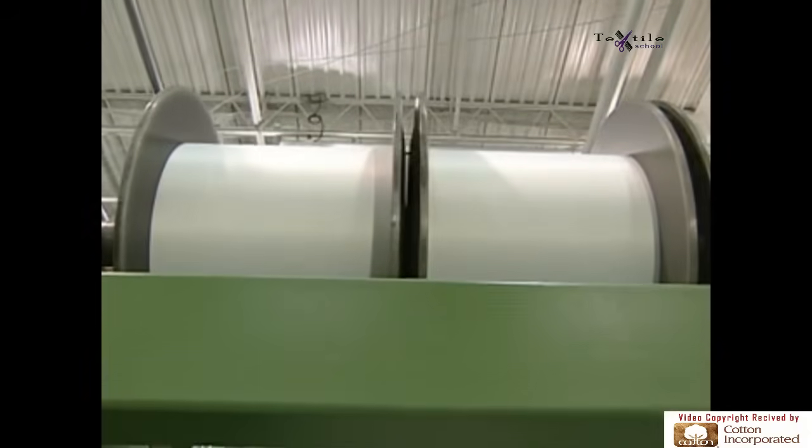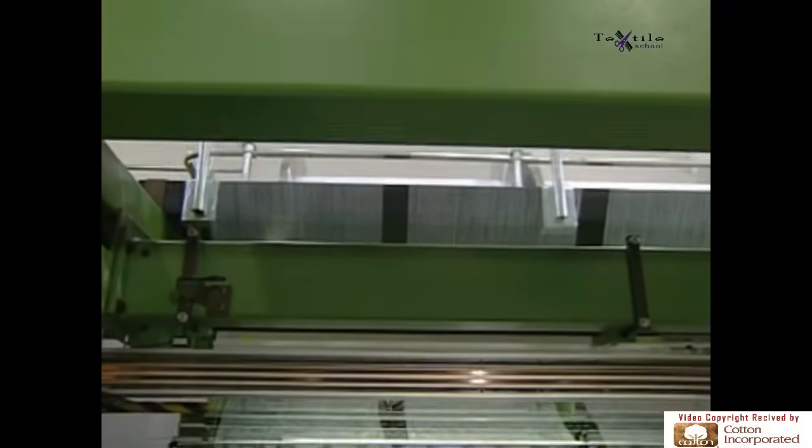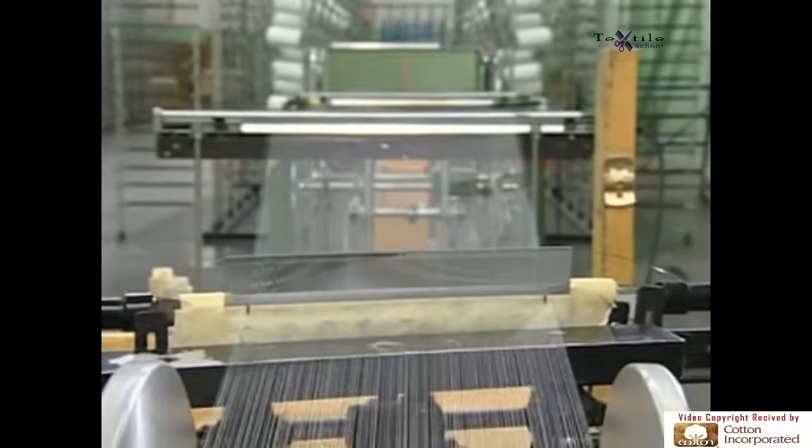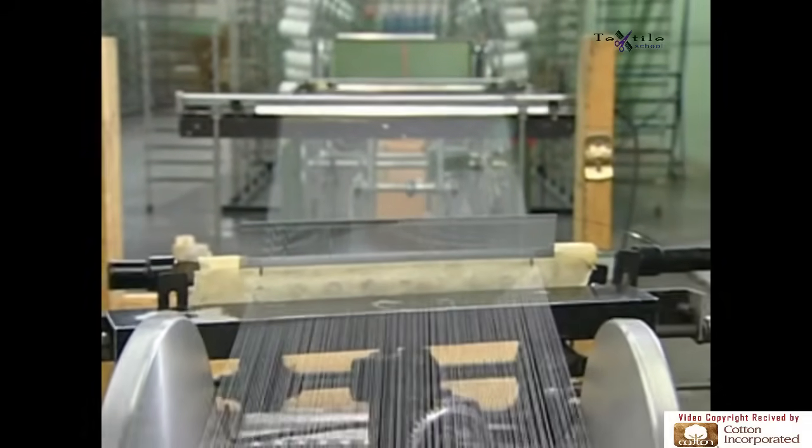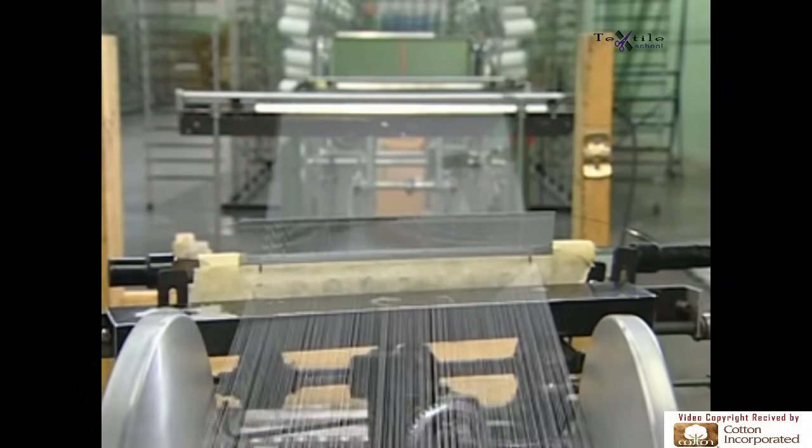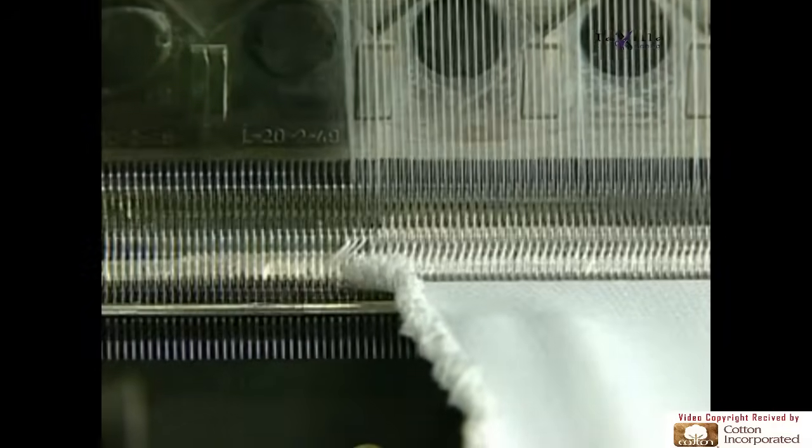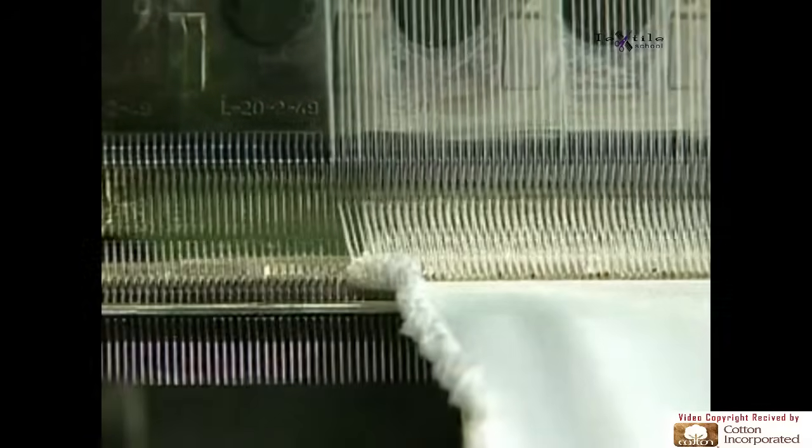With warp knitting machines, each individual loop is created from separate lengthwise yarns. Wound onto a beam from yarn packages in a creel, the yarns arranged as a warp must be placed parallel to each other. Normally, for the most basic of fabrics, each yarn needs its own needle. If 1,000 needles are used on this machine, there needs to be a minimum of 1,000 warp yarns.